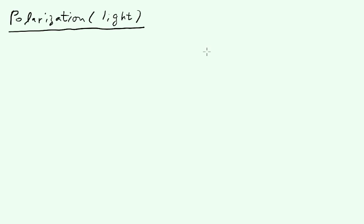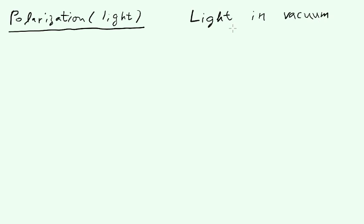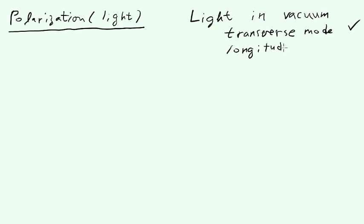First of all, let's make one thing clear. We know that waves can exist in transverse or longitudinal mode. For light, we must remember one thing: light in vacuum exists only in transverse mode — longitudinal mode doesn't exist.